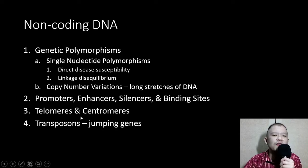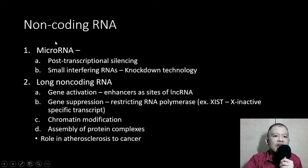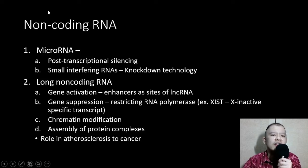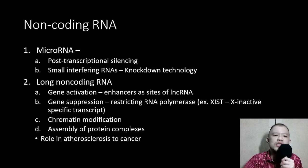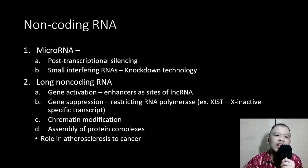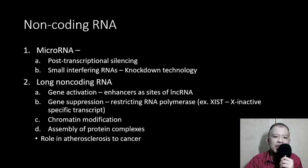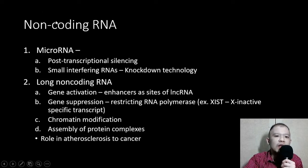Transposons — if you remember from biochemistry — are another form. In non-coding RNA, we have two forms. The first is microRNA, which is involved in post-transcriptional silencing. It is an RNA that is not involved in translation into protein; it remains as an RNA involved in the silencing of translation into protein. You can also have a synthetically produced microRNA, what we call small interfering RNA, used in knockdown technology.